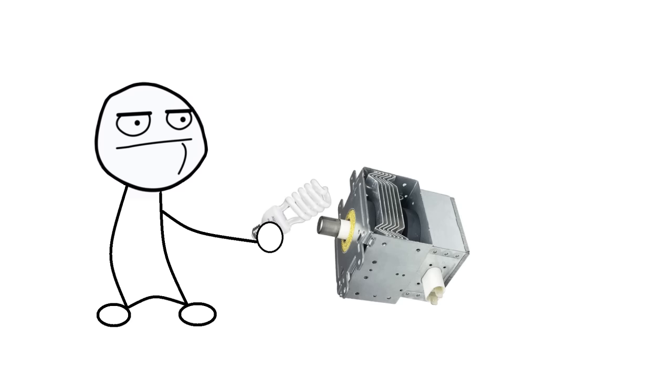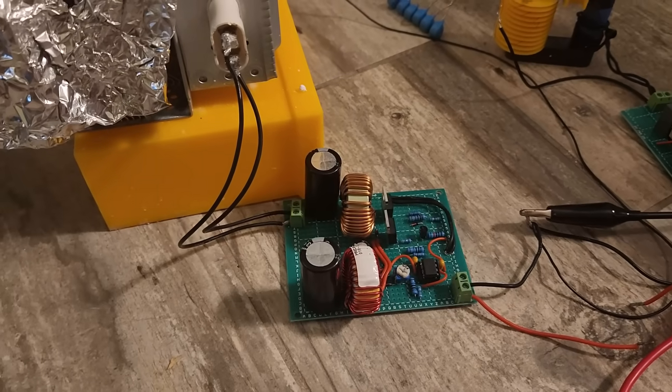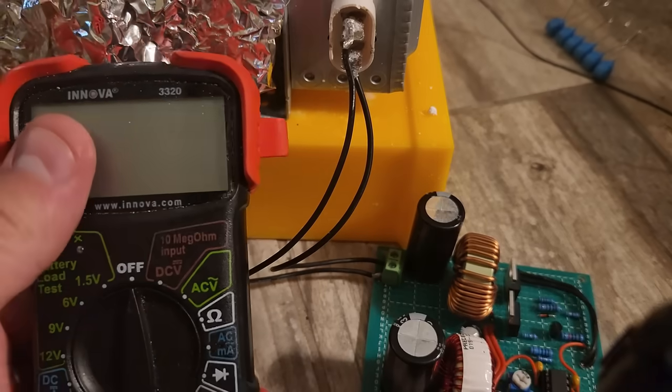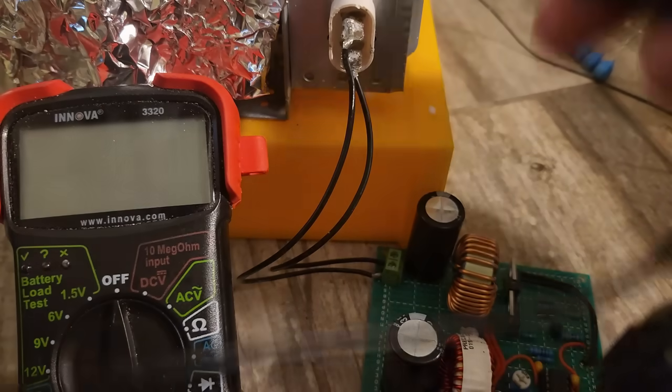However, after making numerous attempts to poke at it, I couldn't get the magnetron to light up a bulb. I didn't have a good way to fine tune the current coming from the filament winding, so I built a separate buck converter to power the filament to figure out what the optimal current was when the anode was running off my high frequency transformer.